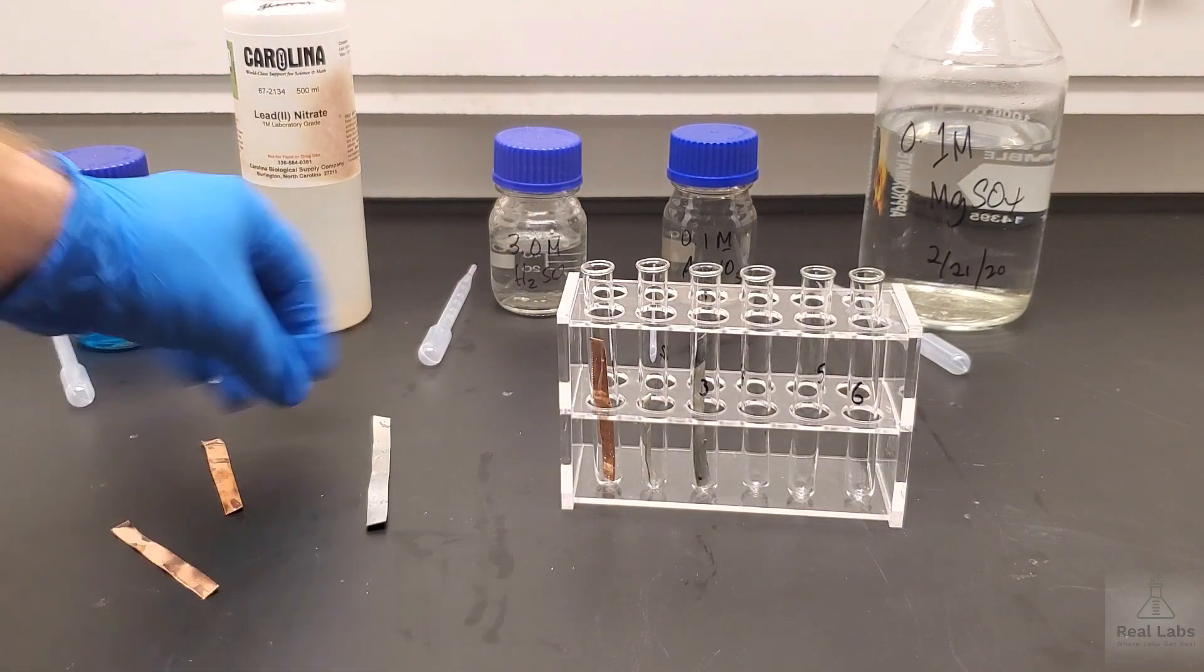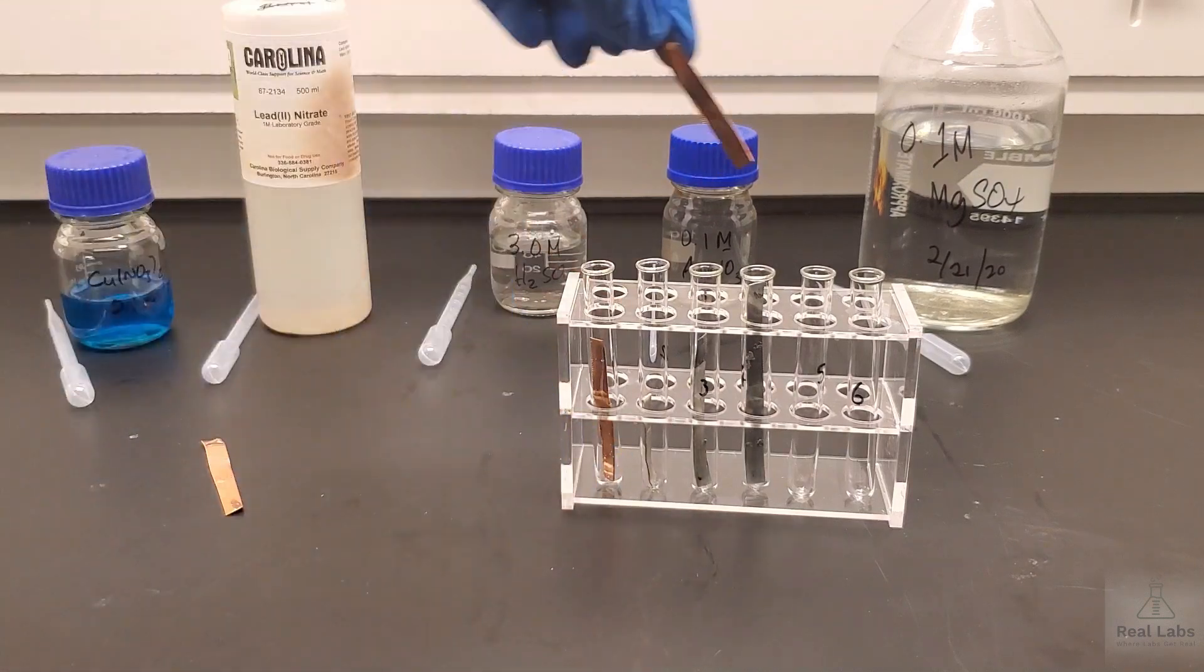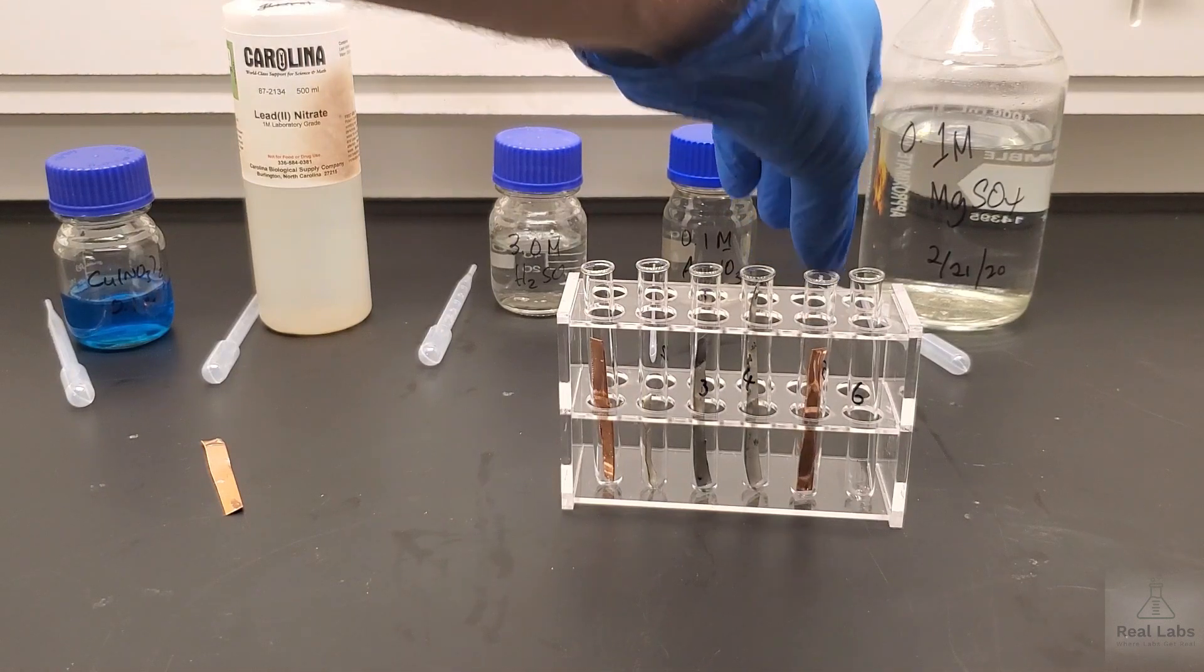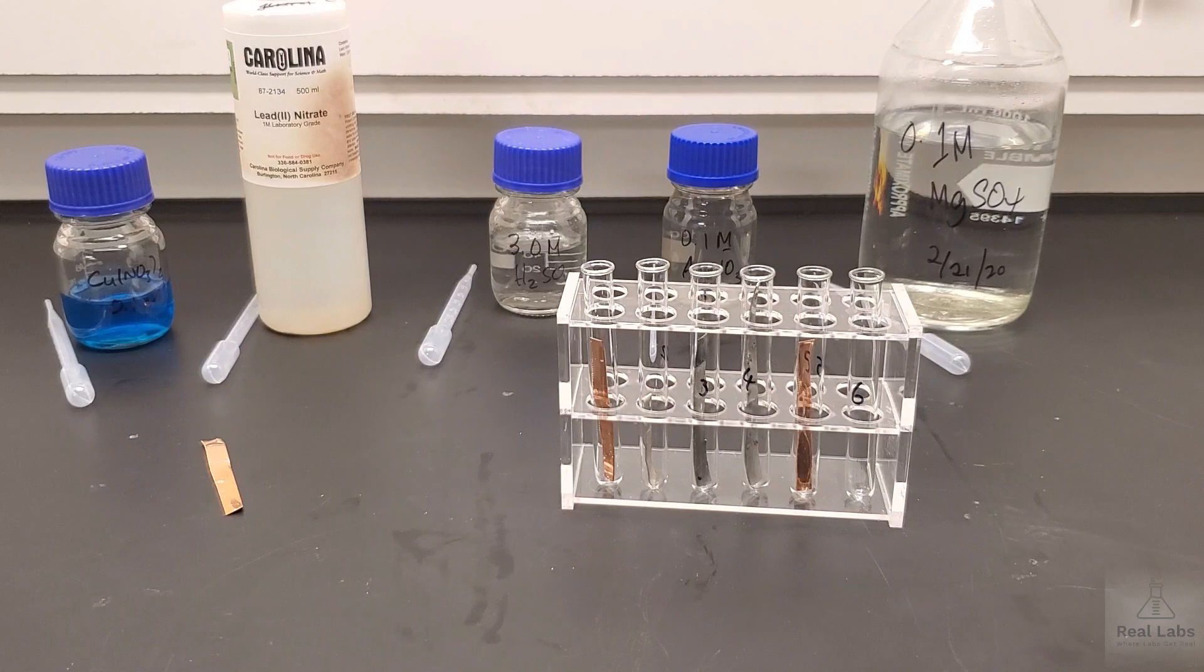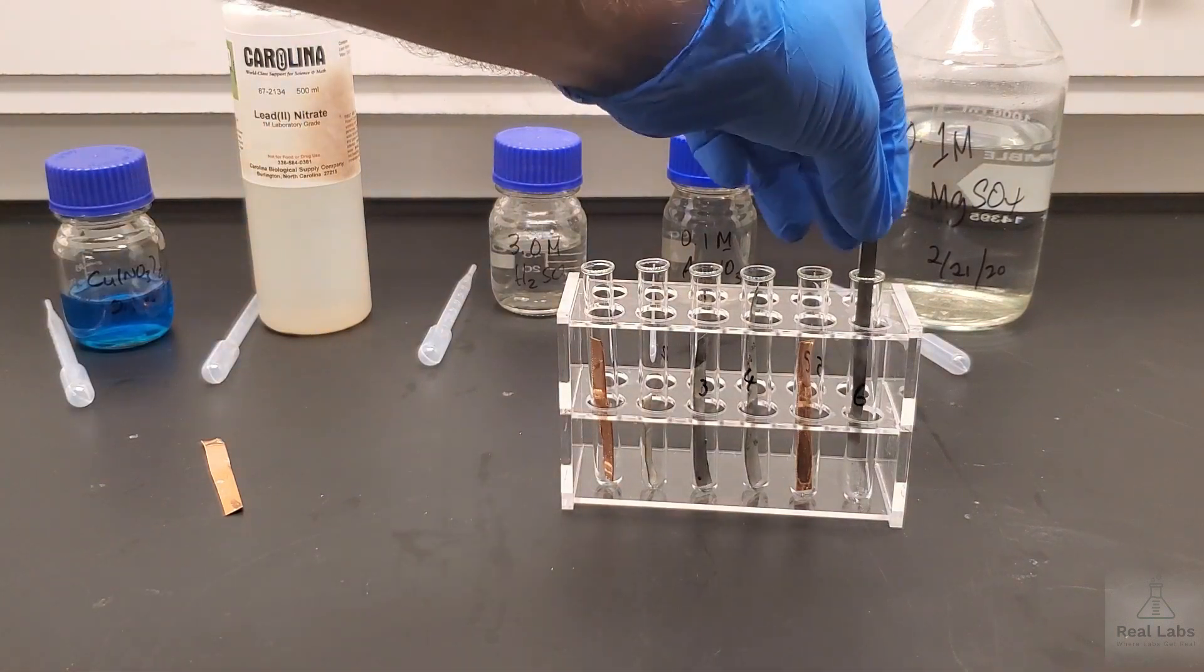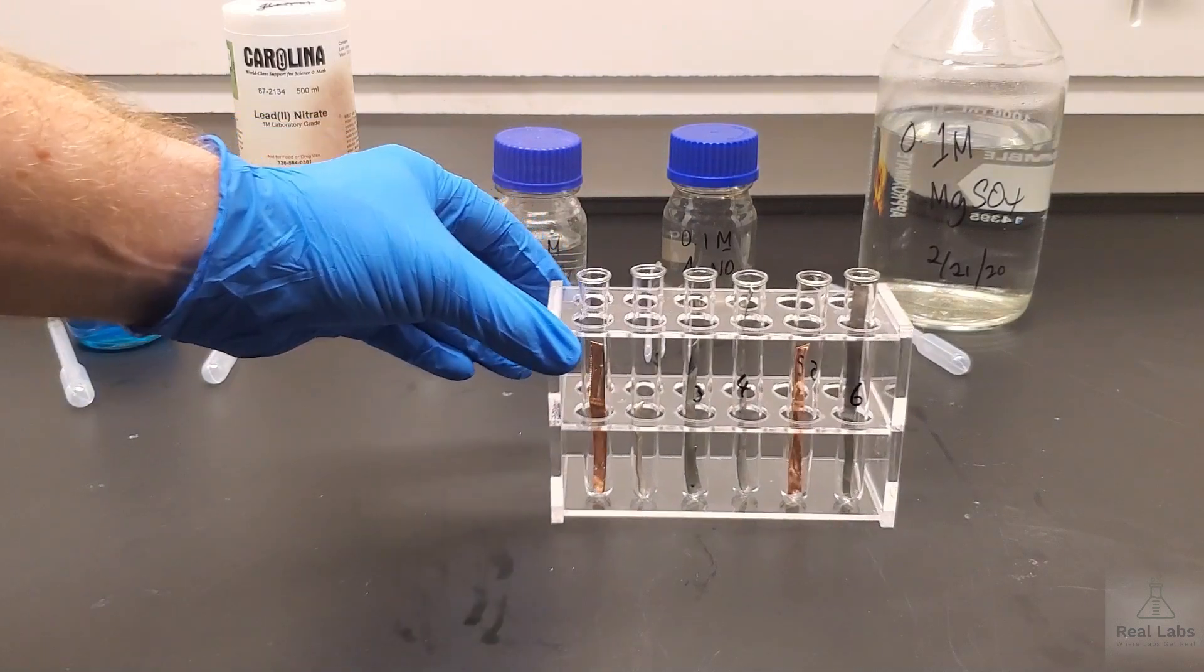We're going to put a zinc strip in number four. We're really going to be looking at the reactions down here in the lower third. Then we're going to put a copper strip in the fifth one. And I need one more zinc strip. So we've got a copper strip in the first one, a lead strip in the second one, a zinc strip in the third and the fourth, copper in the fifth and a zinc in the sixth.